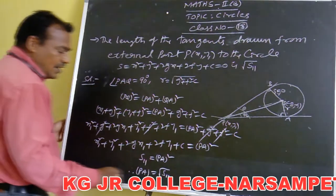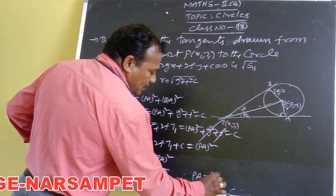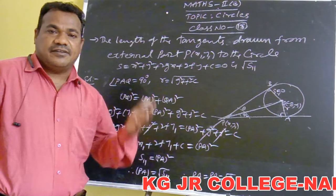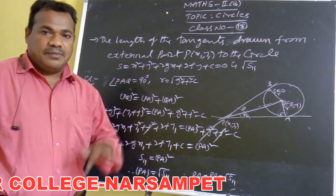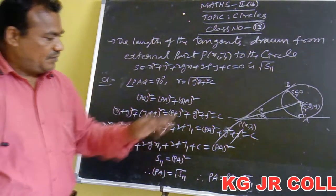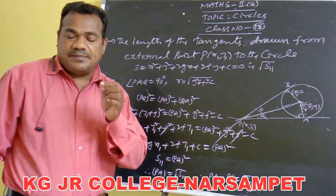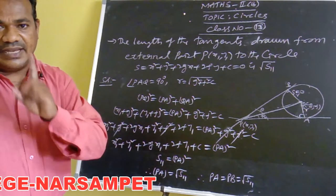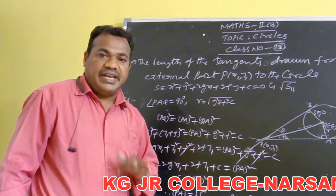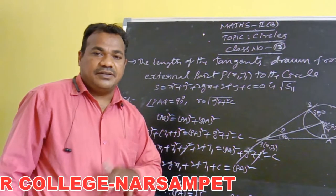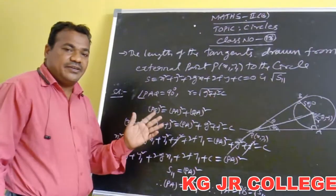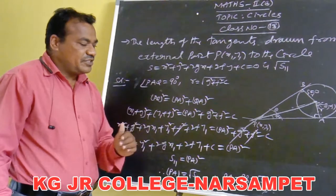Therefore PA = √S₁₁. Both PA and PB are equal to √S₁₁. The length of the tangents drawn from an external point to the circle are equal and equal to √S₁₁. If the point lies on the circle, the length is zero and only one tangent can be drawn. If the point lies interior to the circle, no tangents can be drawn.